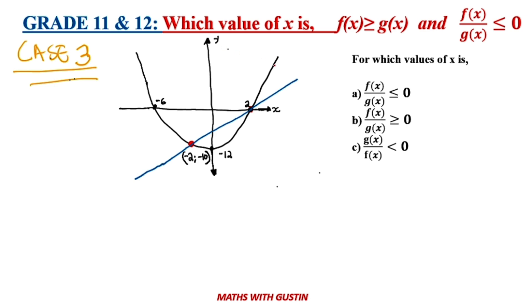We know that this is f of x and therefore this is g of x. Now let's have a look at how you would deal with a situation where one graph is over the other. In this situation where f of x is over the other graph, you treat it the same as when they are multiplying each other — the conditions are the same.